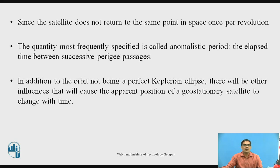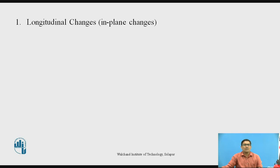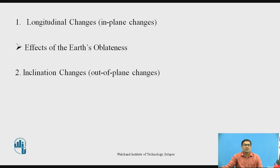In addition to the orbit not being a perfect Keplerian ellipse, there will be other influences that will cause the apparent position of a geostationary satellite to change with time. This can be viewed as those causing mainly longitudinal changes — also called in-plane changes — and those that principally affect the orbital inclination, also called out-of-plane changes. For longitudinal changes, we take the example of effects of the earth's oblateness; for inclination changes, we see the effects of the sun and the moon.